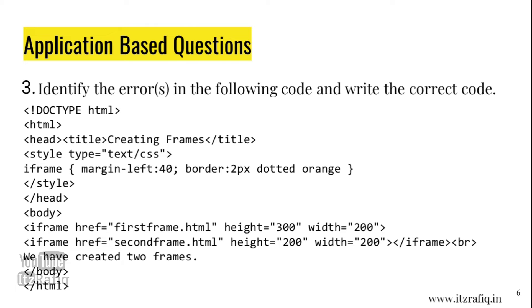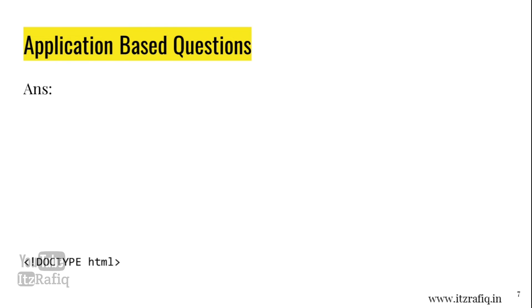Also, since iframe is a container tag, it must be closed — but in this code there is no closing tag for iframe, so we need to add it. The next line also has iframe href, which should again be corrected to src. After correcting all errors, the rest of the code is correct and the corrected version is displayed.